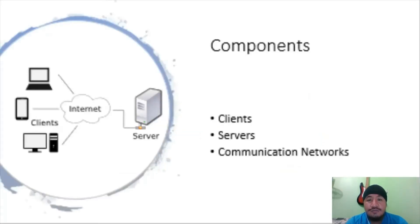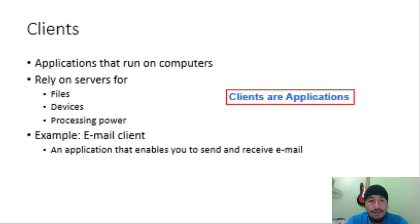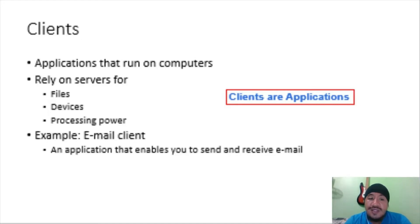We have three basic components in this architecture: clients, servers, and communication networks. Clients are applications that run on computers. They rely on servers for different resources such as files, devices, and processing power. A client does not share any of its resources or services, but it requests content or service from a server.